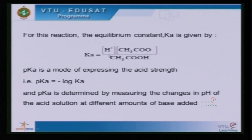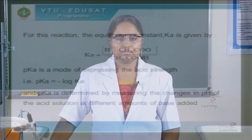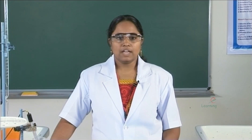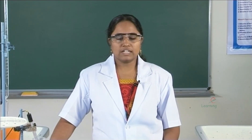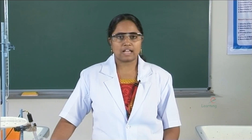pKa is a mode of expressing the acid strength. Its mathematical relation is pKa = −log(Ka). And pKa is determined by measuring the changes in pH of the acid solution at different amounts of base added.